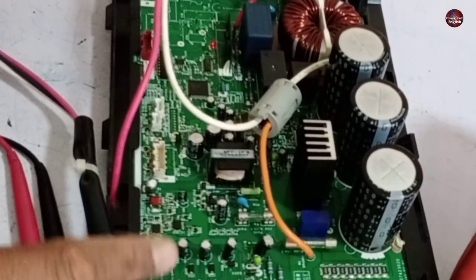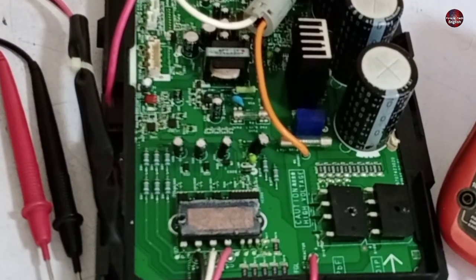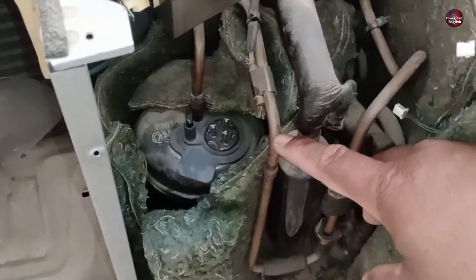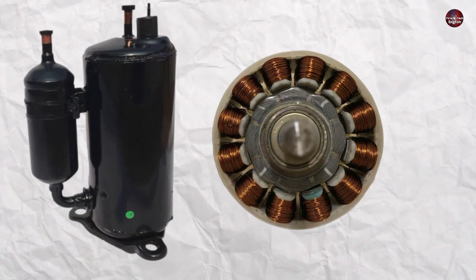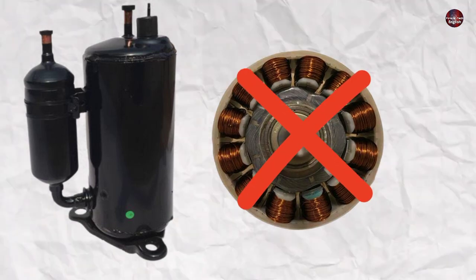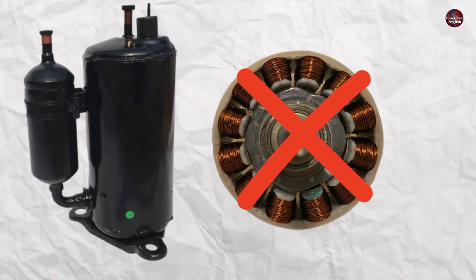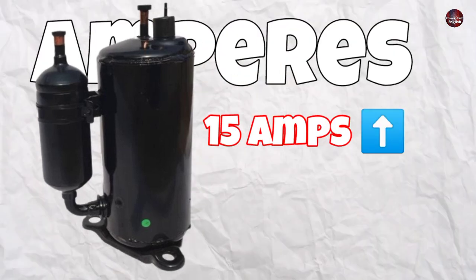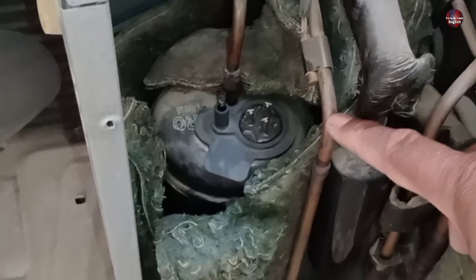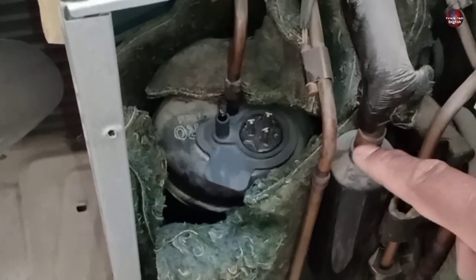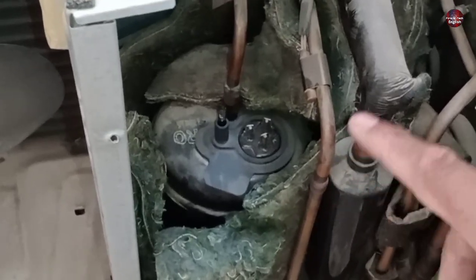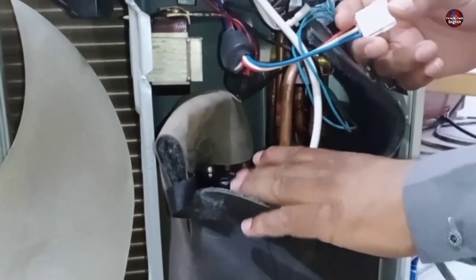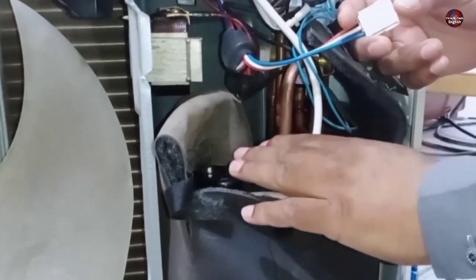Before telling what things to check in the motherboard to fix the current trip error, the first thing you have to check is the compressor of your air conditioner. If the winding of the compressor is short-circuited and it has leakage, the circuit board will detect that the compressor is consuming more ampere than the required amount. The motherboard will trip the compressor and consider this fault as a current trip error. How to test a compressor — I already have a video on it, which will be linked at the end.